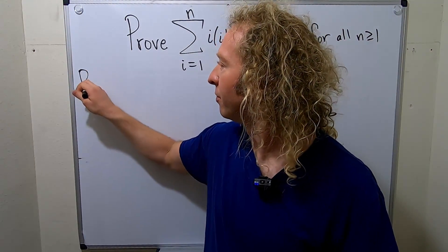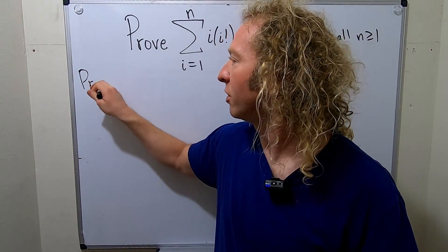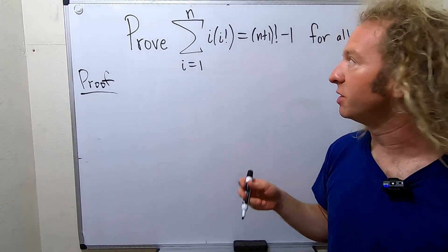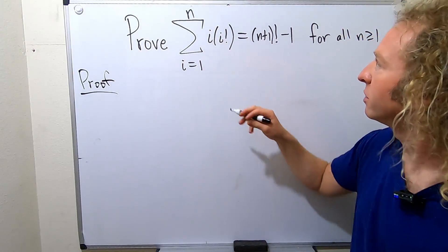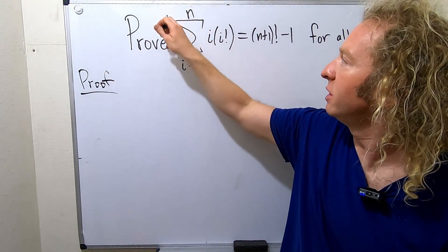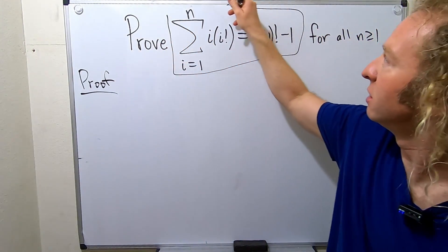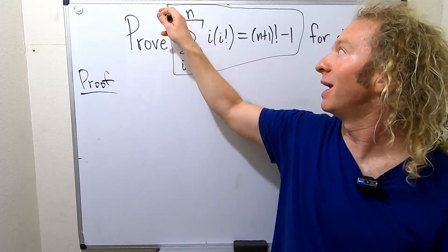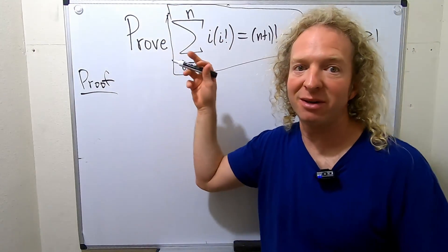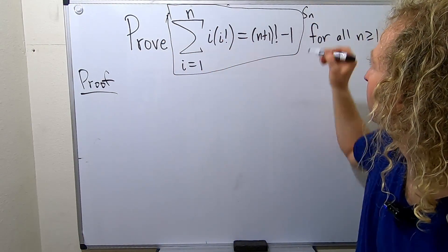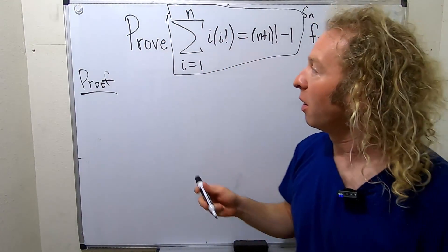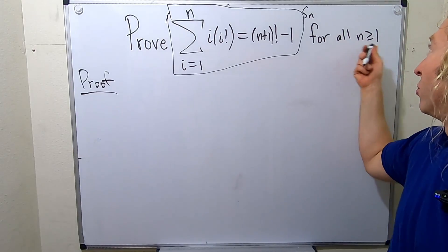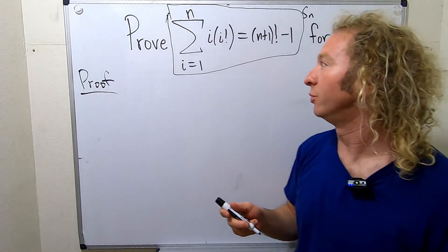So proof. Whenever you're using the principle of mathematical induction, it's really good to identify your statement. So this thing here, I'm going to box it in — this is going to be our S sub n. This is our statement, this entire thing here. And we have to prove this is true for all integers n greater than or equal to 1.